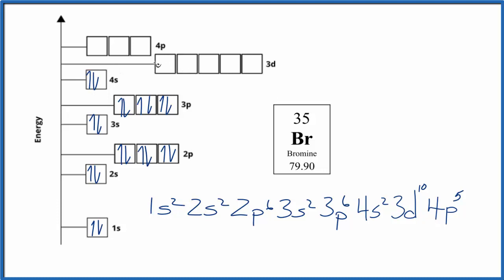For the 3d, we have 10, spread them out and then pair them up. And we end up with 4p5: 1, 2, 3, 4, 5. And this is the atomic orbital diagram for bromine.